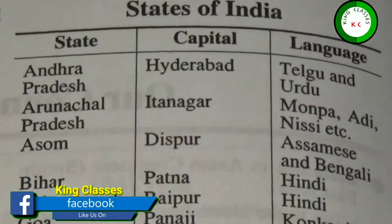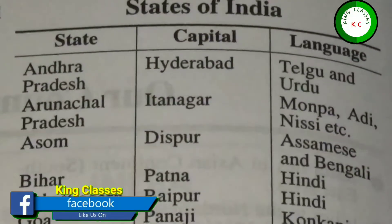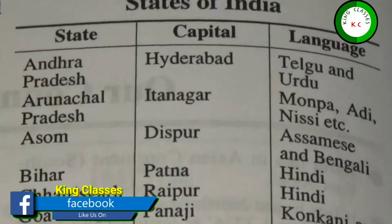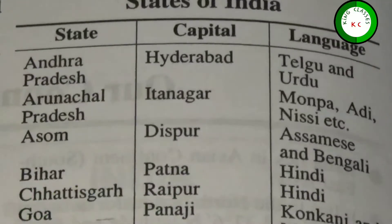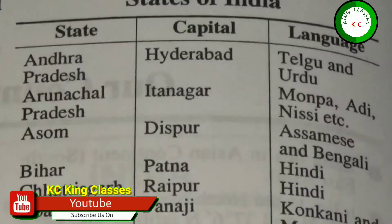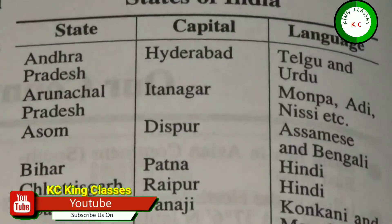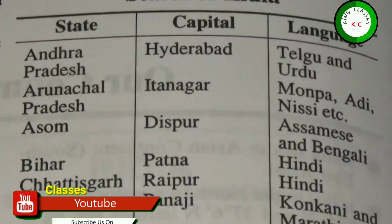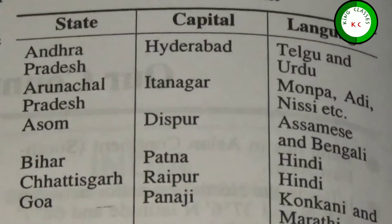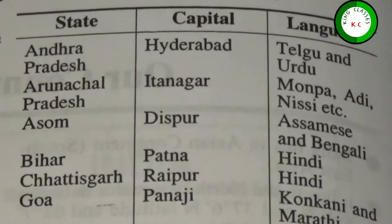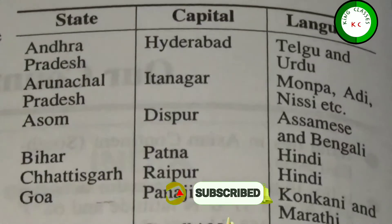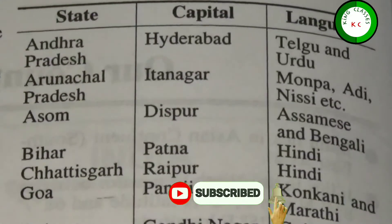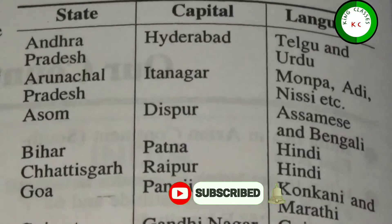Hello, welcome dear students in King classes. The important topic which we are going to discuss for the class 4th is the upcoming topic of Jammu and Kashmir and their states and their capitals. It's also important for all competitive exams. So, let's start this topic.